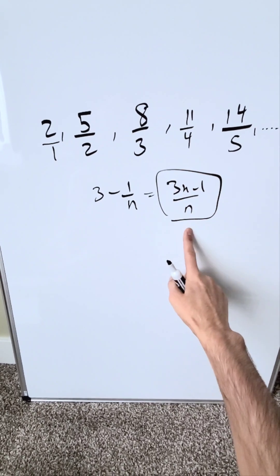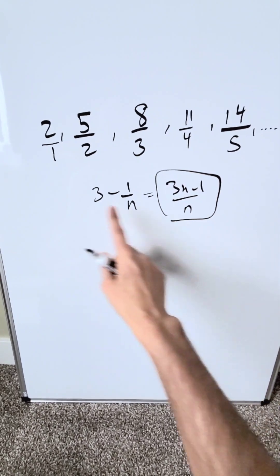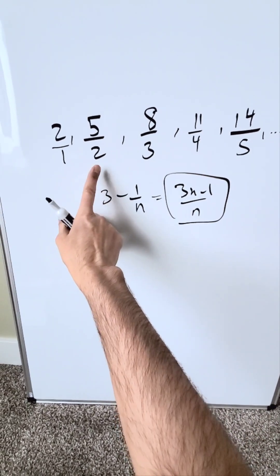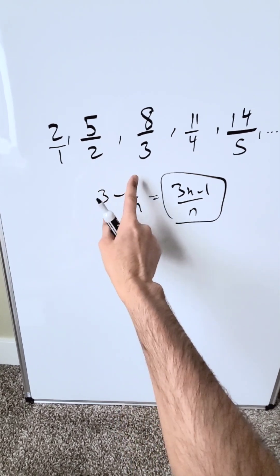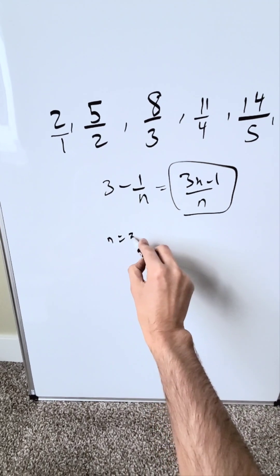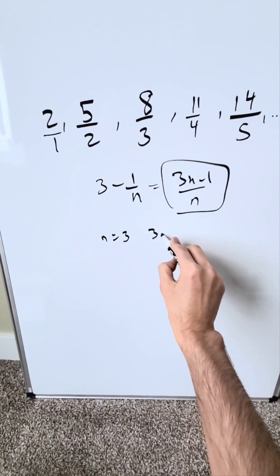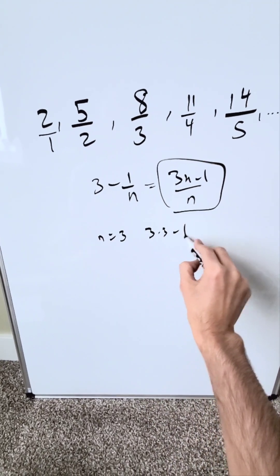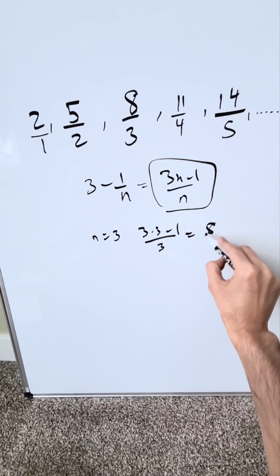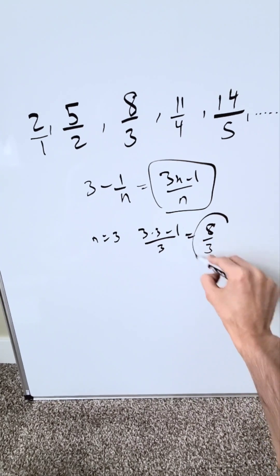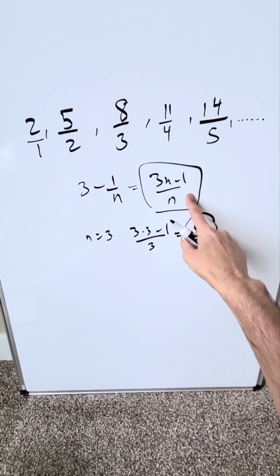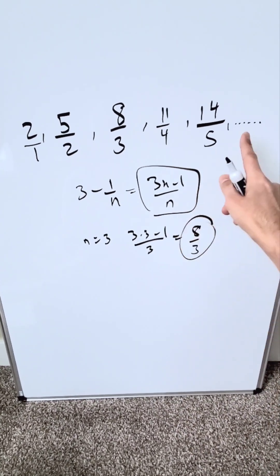As n is equal to 1, this is what I have. As n is equal to 2, I get this. As n is equal to 3, I have this. If n were equal to 3, I have 3 times 3 minus 1 over 3, which is 8 over 3, and that's exactly what it is. Now that we've determined the sequence rule, what is the limit of the sequence?